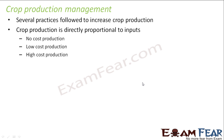In India, farmers are the ones actually giving the inputs, and their inputs depend upon their financial condition — their purchasing capacity. Whatever inputs you want to give or practices you want to follow, you need to spend some money to implement that technology. So a farmer's purchasing capacity decides the cropping system and the production practices he is going to follow.